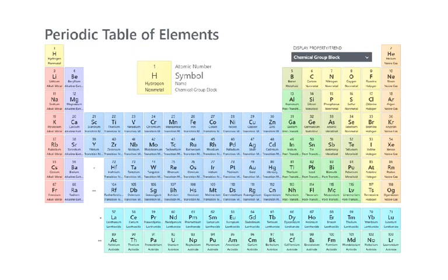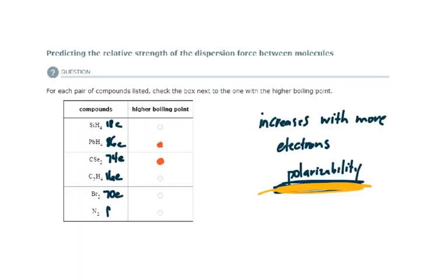And N2, there's nitrogen. I have 14 total. So the one with the higher boiling point is going to be the one with the greatest number of electrons and the highest polarizability, yielding the strongest dispersion forces. That would be that one.